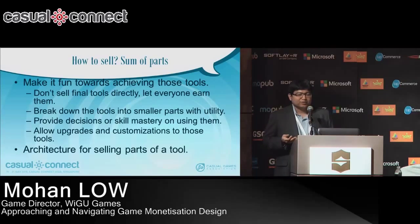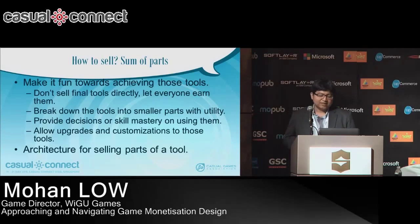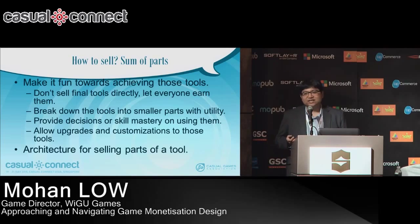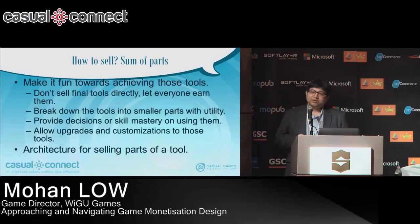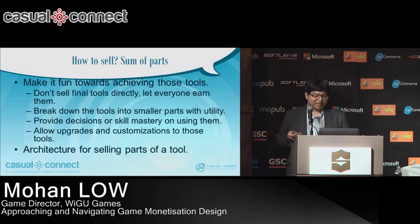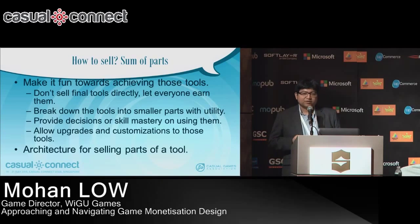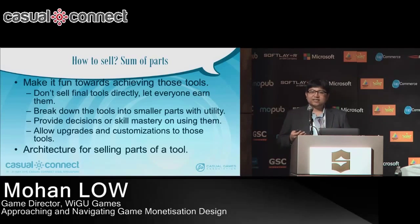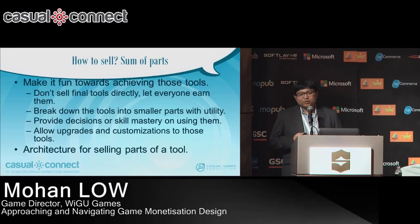A typical scenario: take a character as a tool. Break it down further — the character consists of gear, stats, and skills. Once you've acquired the character, you want to be able to progress it even further. This applies to anything you want to sell. The architecture for selling tools means that the more tools and stuff you have, the more things you can sell — like walking into a department store with hundreds of items versus just three.